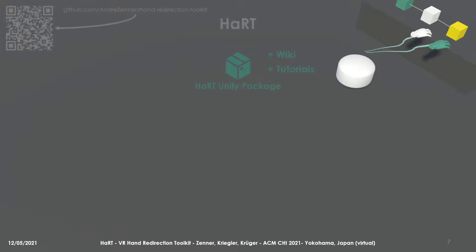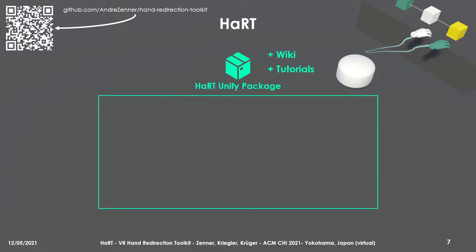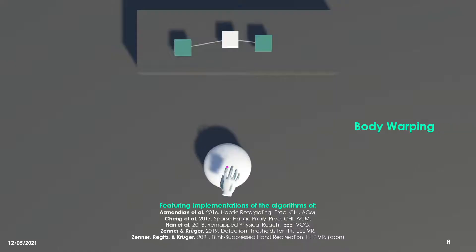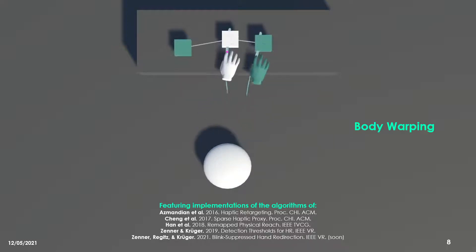The scripts contained in the Unity package implement a modular class hierarchy, by which users of the toolkit can easily implement their own custom redirection techniques and extend the framework. Alternatively, users can also use one of the many reference implementations of algorithms published by previous research.